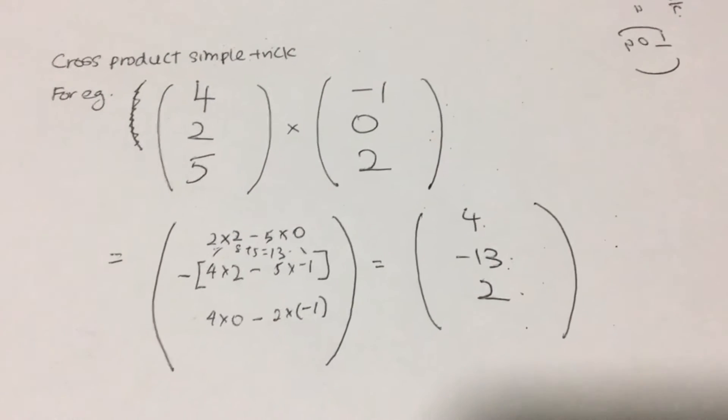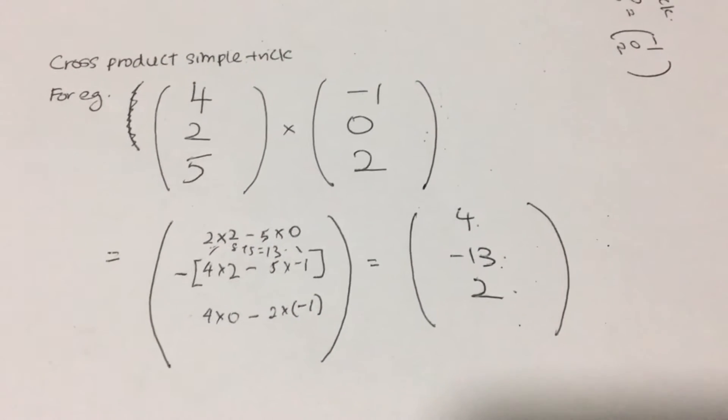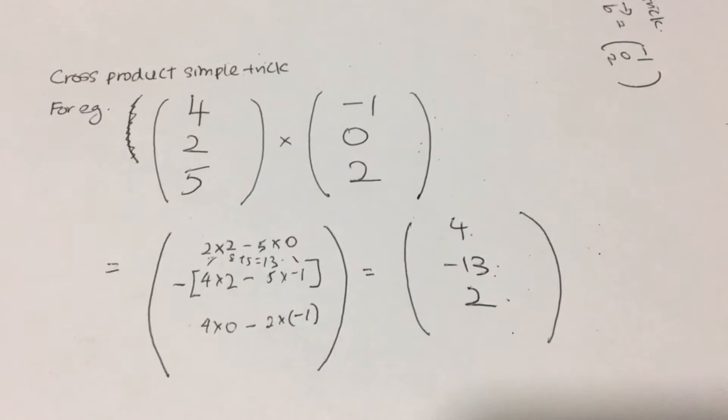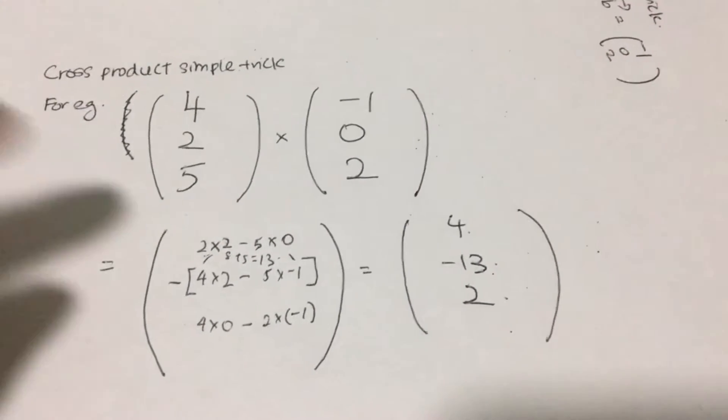So, it is very simple. It's a very simple trick, as to how you actually compute the cross product of 2 vectors.